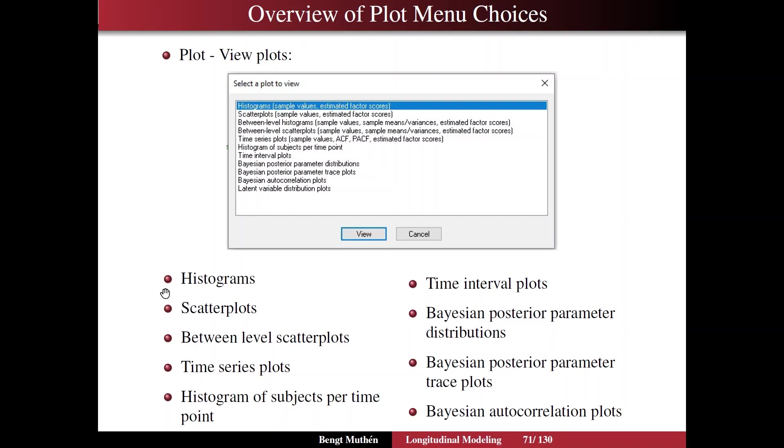We've looked at histograms, scatter plots, and between level scatter plots. Now for DSEM we're going to be interested in time series plots. Time series plots is for each individual, each ID, and also another choice is the average over IDs. We also have the possibility of showing a histogram of the number of subjects per time point. So you can see the coverage per time point. And we're going to take a look at the time interval plots, which has to do with this misalignment in time that can happen due to the t-interval option.